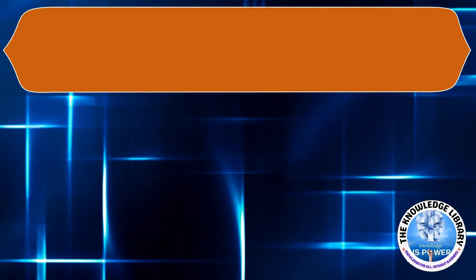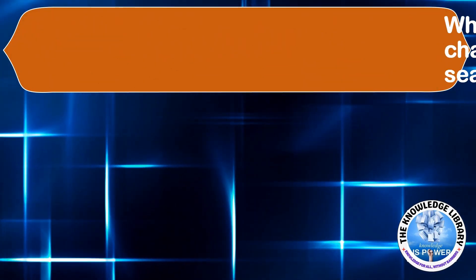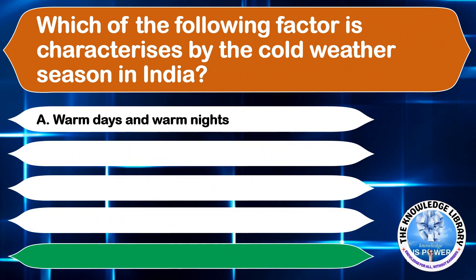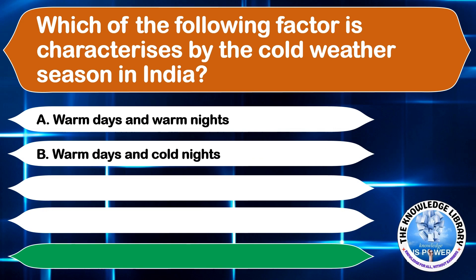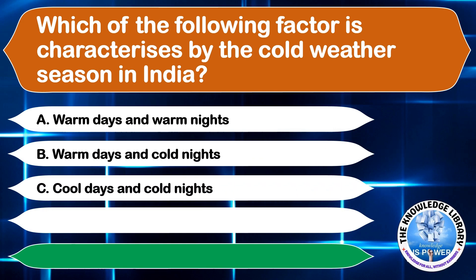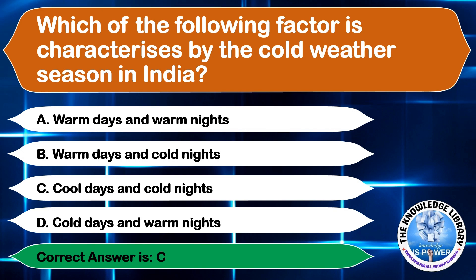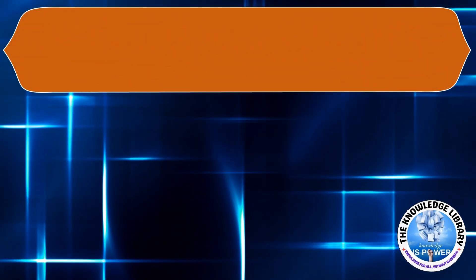Which of the following factors characterizes the cold weather season in India? A. Warm days and warm nights, B. Warm days and cold nights, C. Cold days and cold nights, or D. Cold days and warm nights. The correct answer is option C, cool days and cold nights.